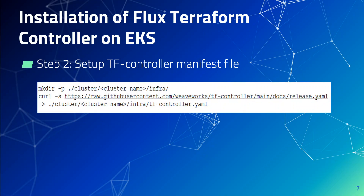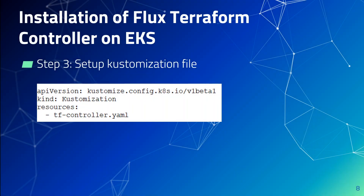As a second step, create a directory and place the tfcontroller.yaml file in it. You can download this tfcontroller.yaml manifest file from the release location — the link is provided. Add the manifest file to the git repo and commit the changes, then push the repository. As a final step, set up the customization file in the same directory using the familiar Kubernetes manifest format — create a customization.yaml file that points to your Terraform controller.yaml file downloaded in the second step. Add this customization.yaml to your git repository, commit the changes, and push it to the repository.